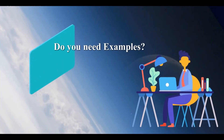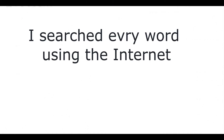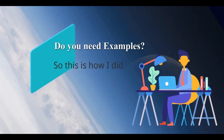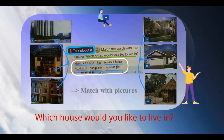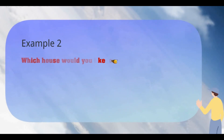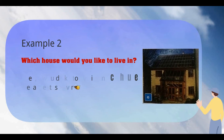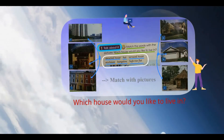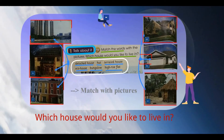Do you need examples? Okay, let me tell you how I did it. I searched every word using the internet and got some pictures. You can get help from your elders, your parents, on how to search the names of other types of homes using the internet safely. Please feel free to ask us if you don't know. For example, which house would you like to live in? Well, I would like to live in an eco house because it is environment friendly. Now it's your turn to match the words with pictures and share which house you would like to live in.